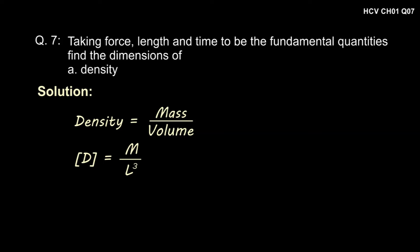In the first part, where we have to find the dimension of density, density is given by mass by volume. Therefore, dimension of density is M divided by L cube.